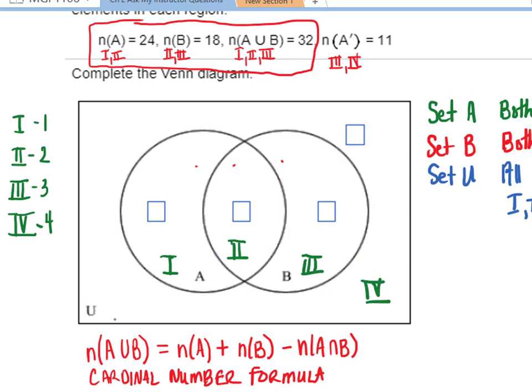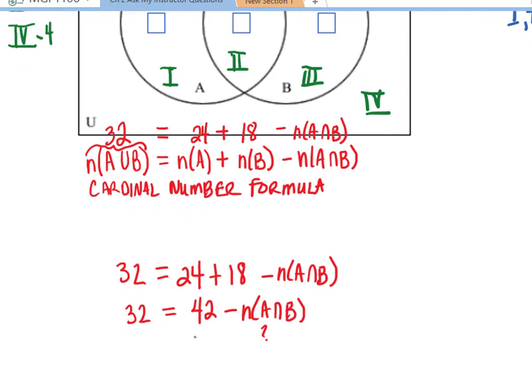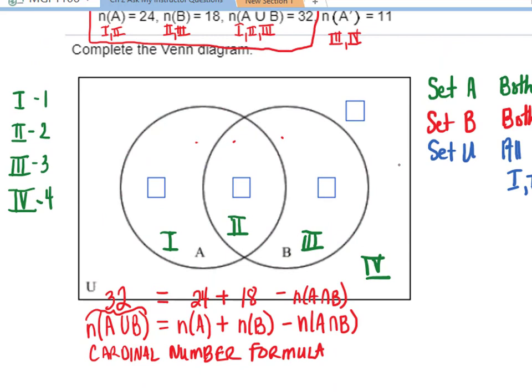A union B we know has 32. So 32 equals A has 24 plus B has 18 and then we don't know this one. All right, so 24 plus 18 would be 42. So 32 equals 42 minus the number in A intersect B. Now you can solve it like an equation, but what number would you have to subtract from 42 to get 32? 10, right? So that must mean that the number in A intersect B is 10. So let's go ahead and put that value up here.